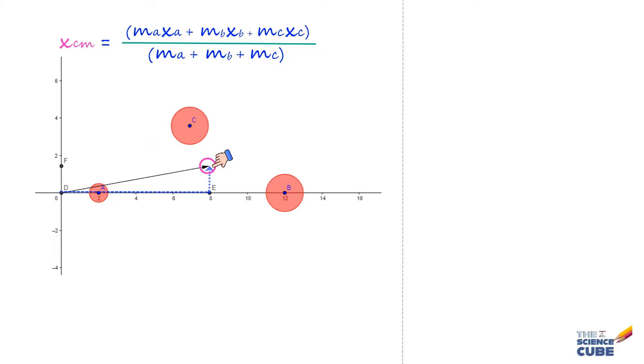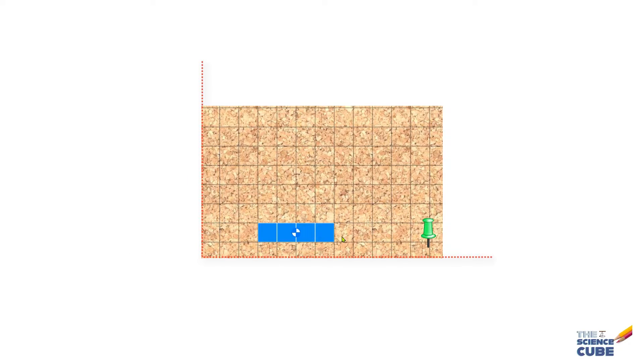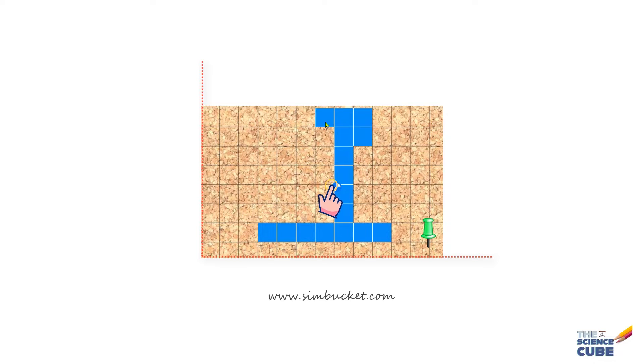In fact, Simbucket has a very interesting simulation that shows how the center of mass moves as the distribution of mass changes. So, you see here, the center of mass is along the x-axis as you add mass along the x-axis. But the moment you add mass along the y-axis, the center of mass moves above the x-axis. And if you continue to add more mass along the y-axis, the center of mass keeps moving up.